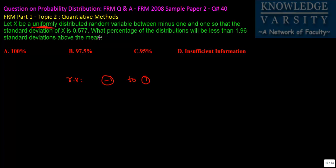The standard deviation of this random variable is given as 0.577. Now, they are asking us to find out what percentage of distribution will be less than 1.96 standard deviations above the mean.